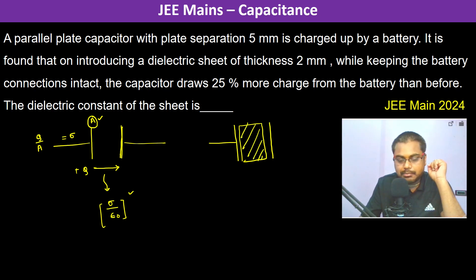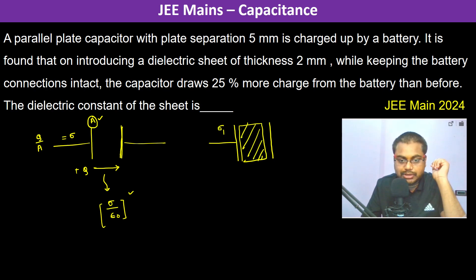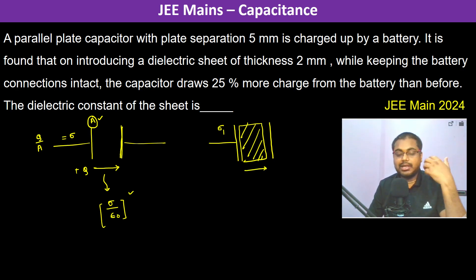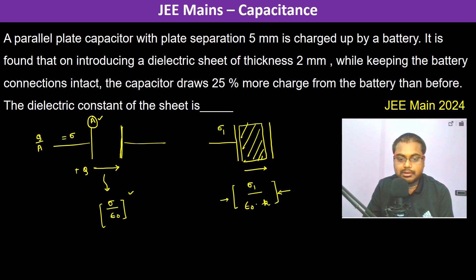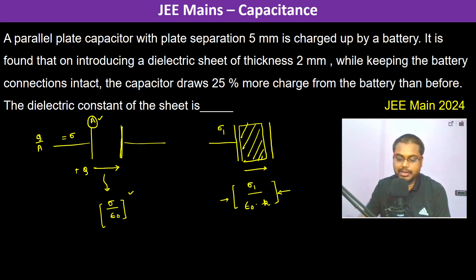When a dielectric is introduced, the electric field due to the dielectric becomes Sigma divided by epsilon naught times K. So ordinarily it was just Sigma divided by epsilon naught, but now with the dielectric it becomes Sigma divided by epsilon naught times K.